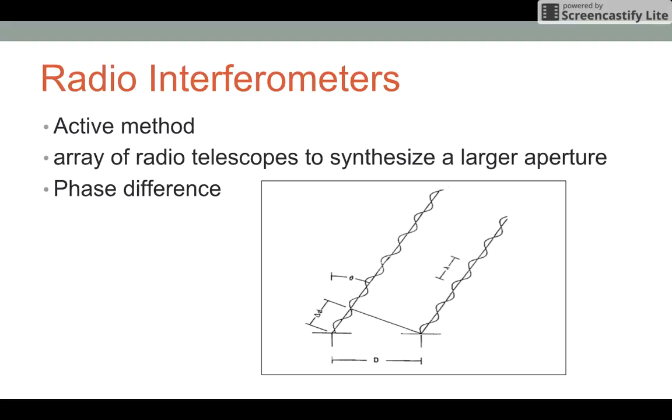Radio interferometer is an array of radio telescopes that are used to synthesize a larger aperture in that the diameter of the dish is not the actual diameter of the individual dishes. It's the distance between the dishes, which is the diameter.